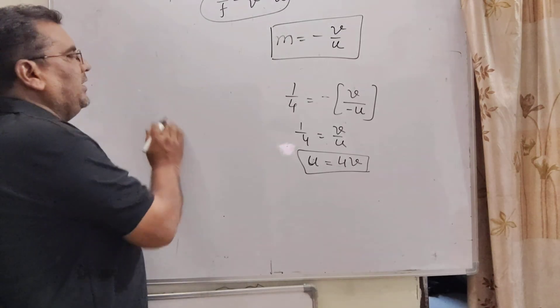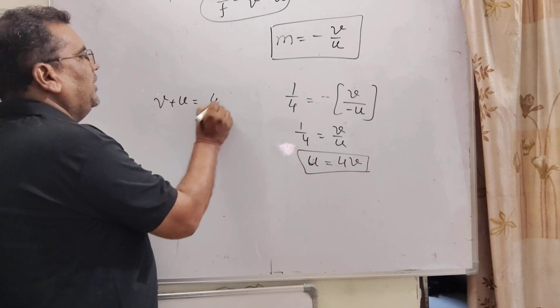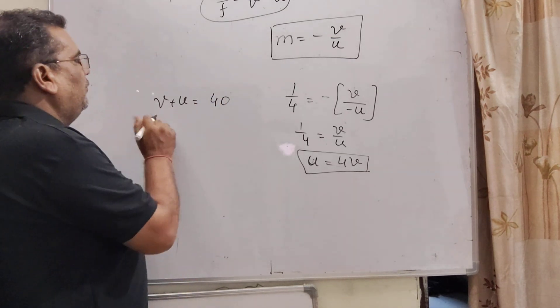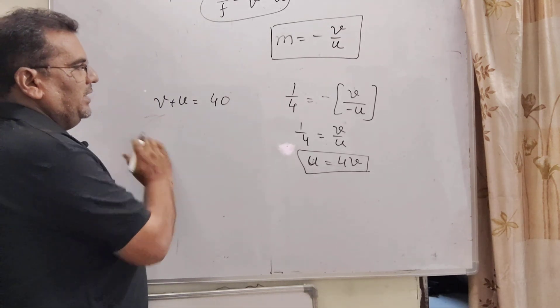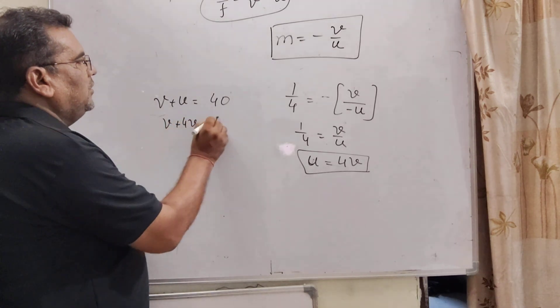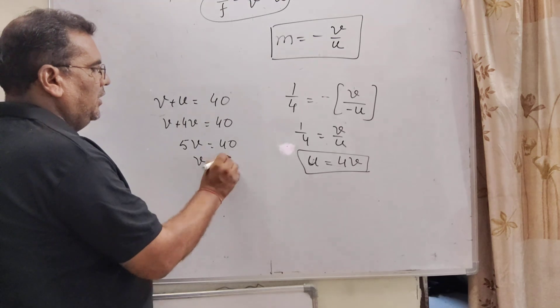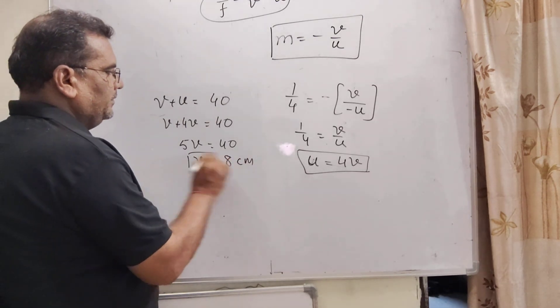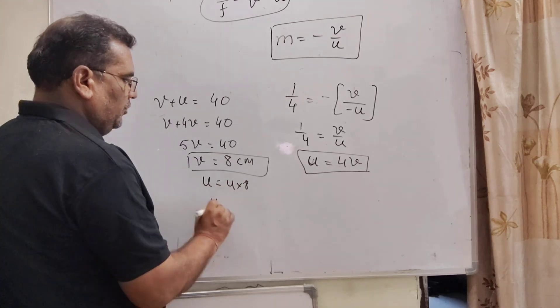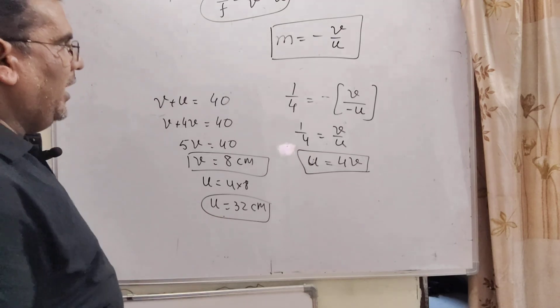Now, here given that the distance between image and object V plus U is equal to 40. So now, substitute the value 4V in the place of U. V plus 4V is equal to 40. Then 5V is equal to 40. Then V is equal to 8 centimeter. And therefore, U is equal to 4 into 8 means U equal to 32 centimeter. So here we get U and V.